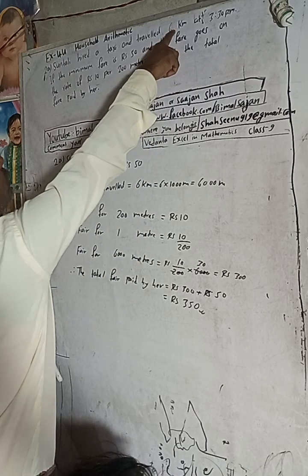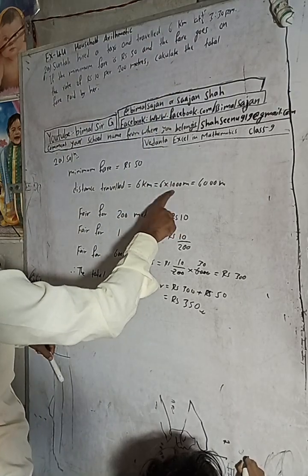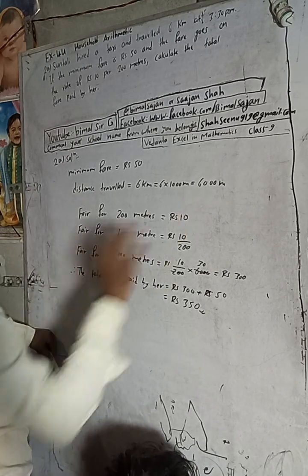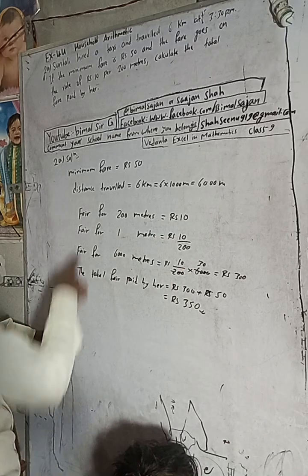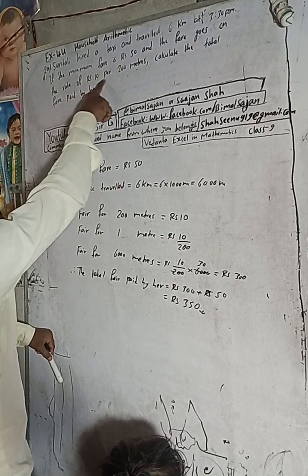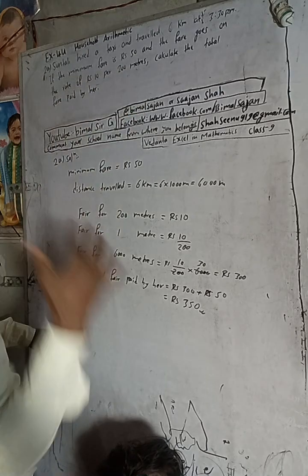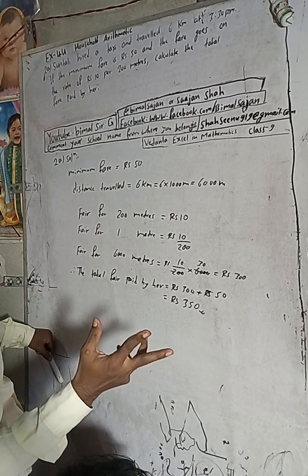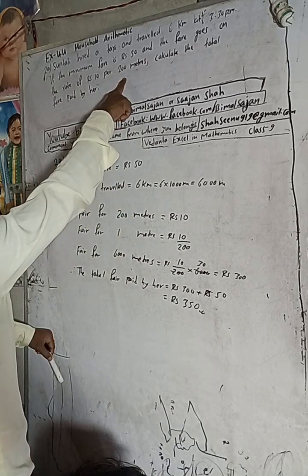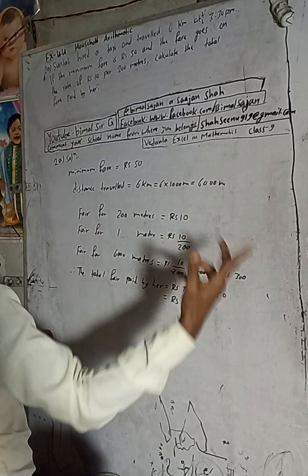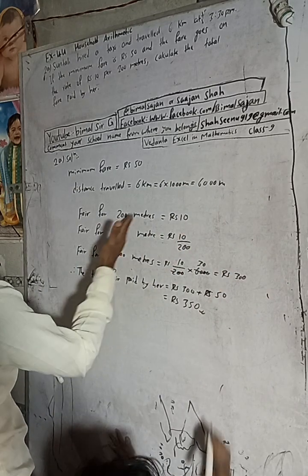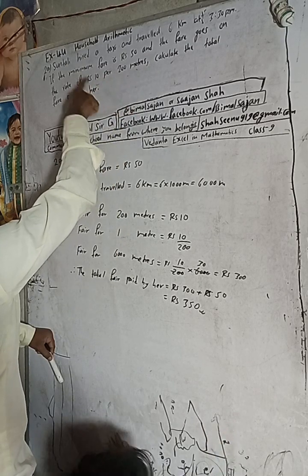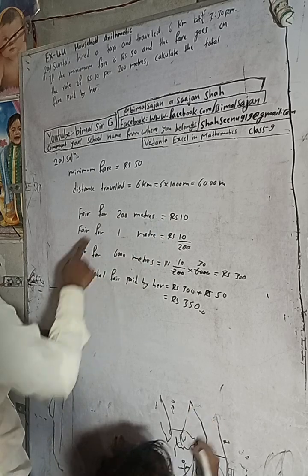The distance traveled is 6 km. Since 1 km equals 1,000 meters, we multiply to get 6,000 meters. The rate given is Rs 10 for 200 meters. This is a simple concept using the unitary method.